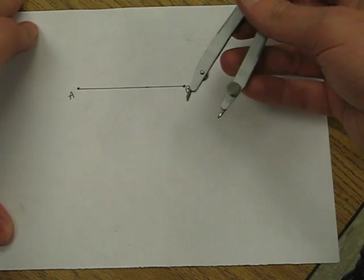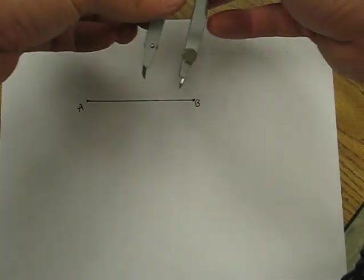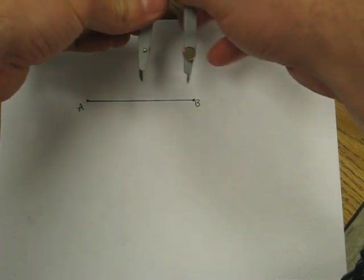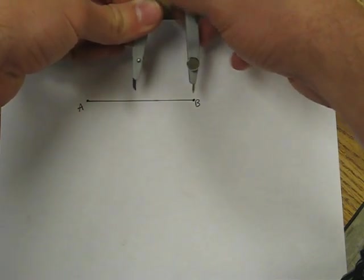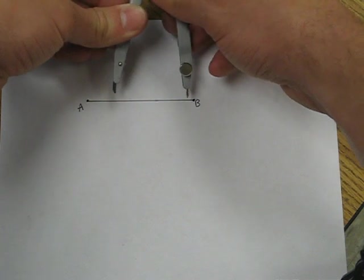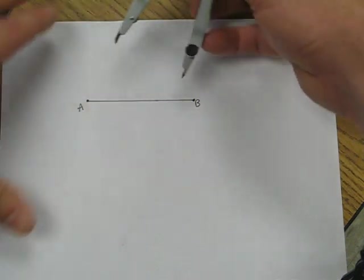The first step is to use your compass and open it up to a radius that is more than half the length of your segment. It doesn't matter as long as it's more than half. I'd say that is about more than half.